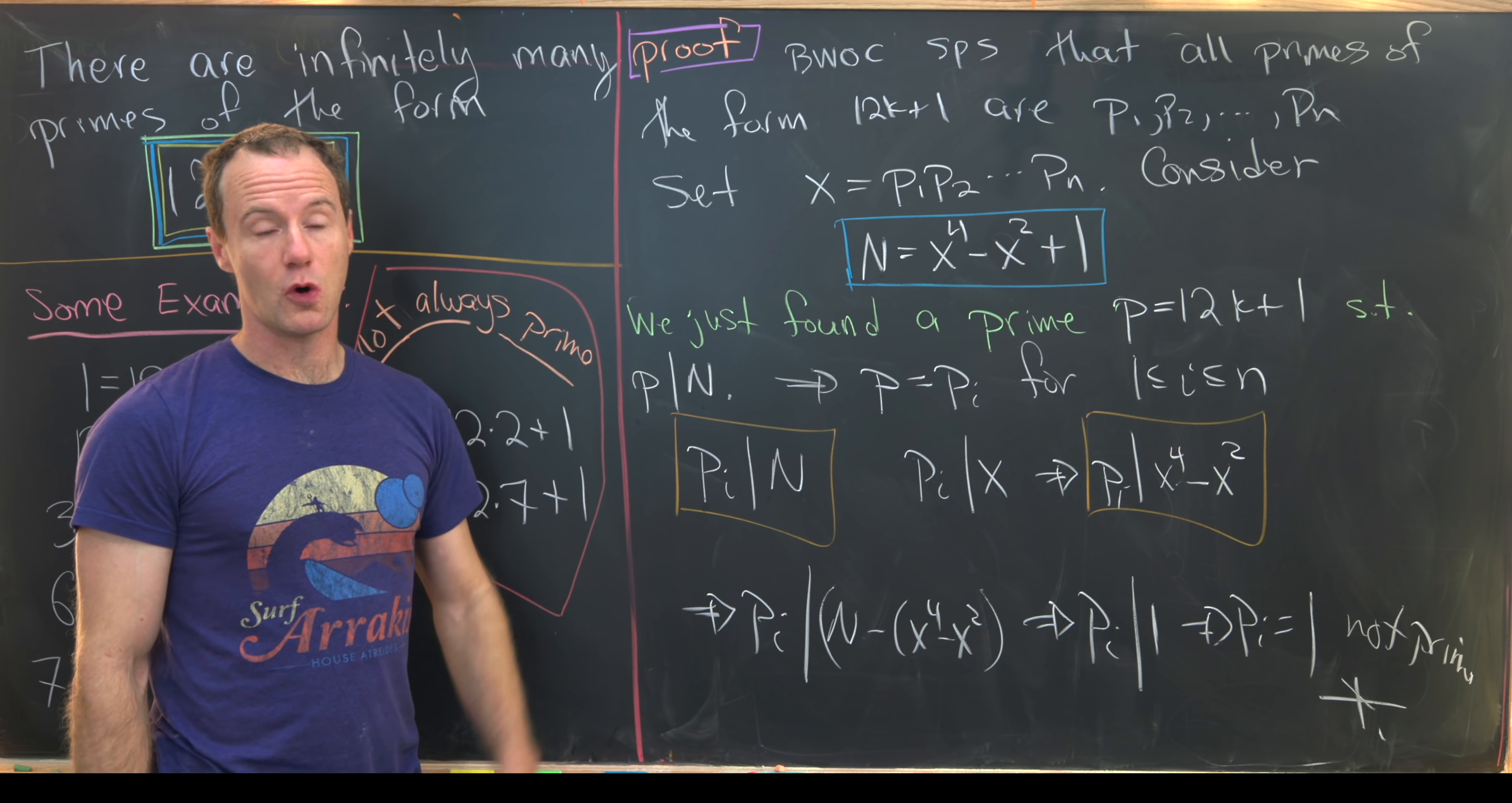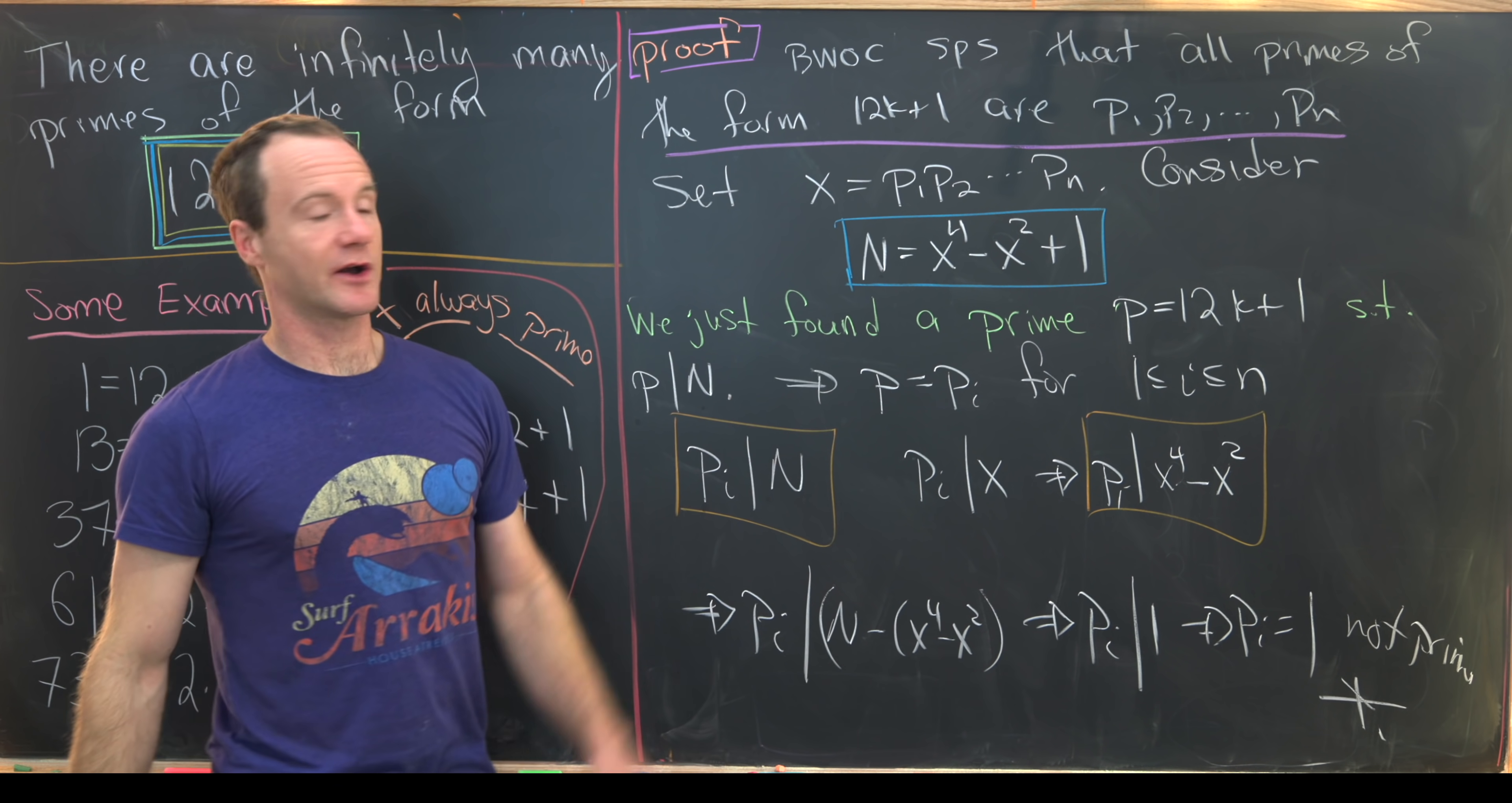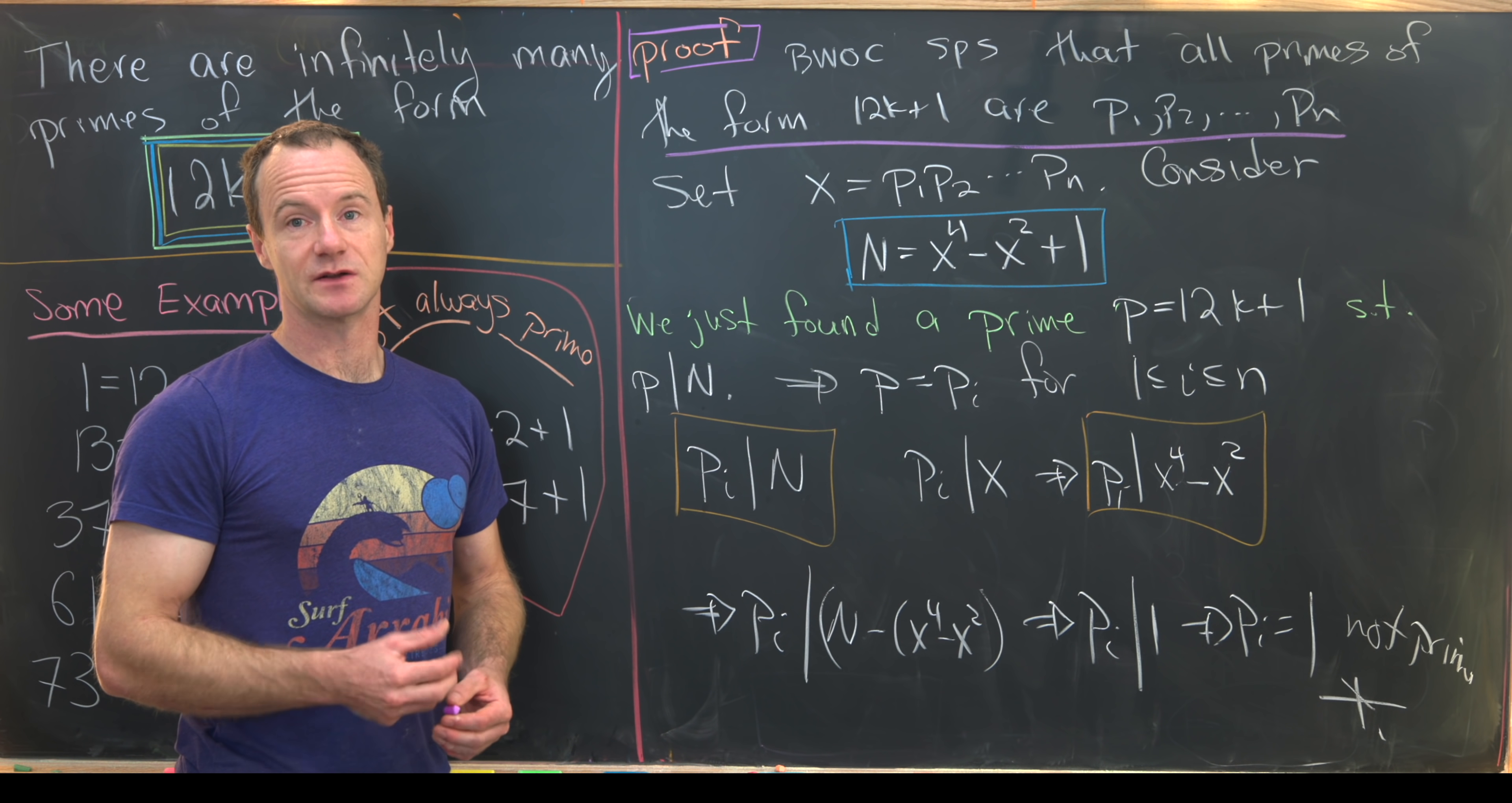And where's the first place, really the only place that we've made an assumption and not followed logic? That is that all primes of the form 12k plus 1 are on that list. In other words, there are finitely many. That's false, which means there are in fact infinitely many primes of the form 12k plus 1. And that's a good place to stop.